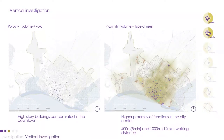The next step was vertical investigation. The policy map helped us locate high-story buildings in the city, which are highly concentrated in the downtown. The proximity map helped us see the quality of movement by walking, and higher proximity of functions was noticed in the city center.